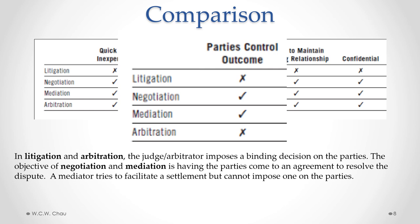The next criteria is who controls the outcome — do the parties themselves control the outcome in terms of resolving the dispute? In litigation and arbitration, the judge or arbitrator, as the case may be, imposes a binding decision on the parties. With negotiation and mediation, the objective is having the parties come to an agreement to resolve the dispute. If they can't, there is no resolution. Where a mediator is involved, the role of the mediator is to try to facilitate a settlement between the parties, but the mediator cannot impose any kind of decision on the parties.